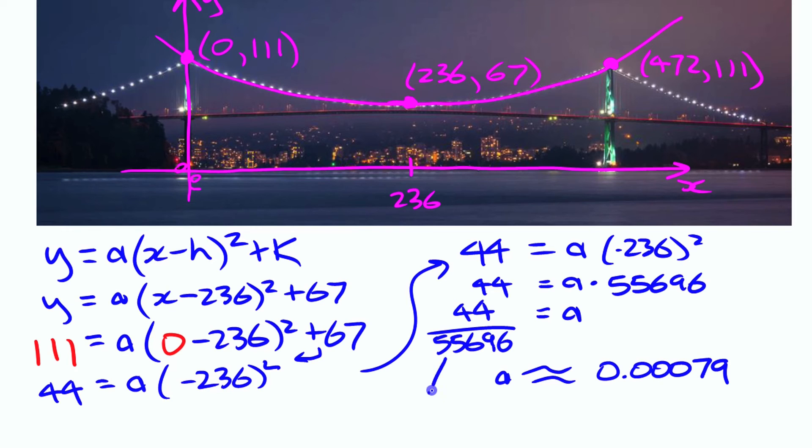Or you could reduce that to lowest terms. If you write this in lowest terms, I believe what you'll find is it is 11 over 13,924.